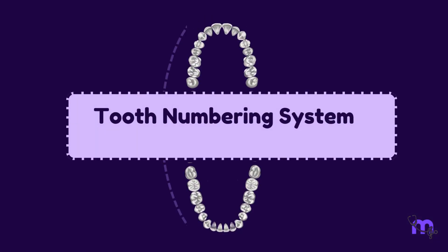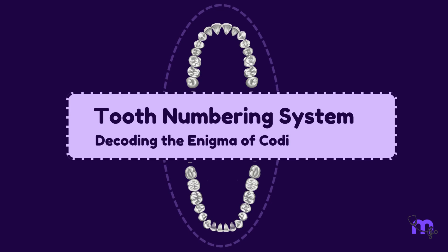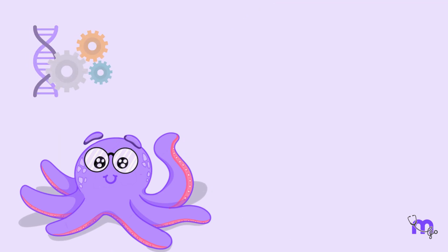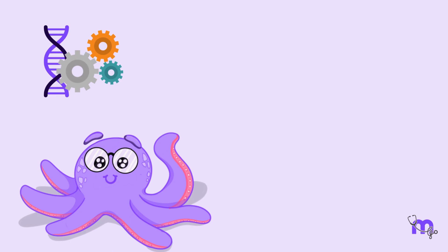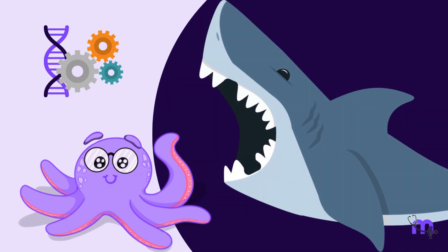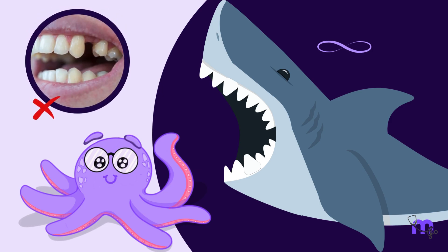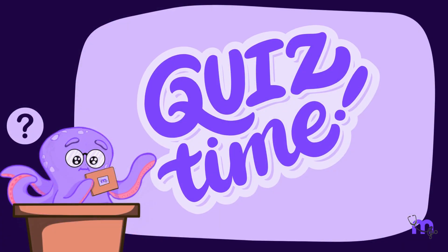Tooth numbering systems: decoding the enigma of coding teeth. Did you know that sharks have an infinite number of teeth? Yes, they have a biological mechanism such that if a tooth is lost, the jaw allows another one to replace it an infinite number of times. However, the same is not true for humans.